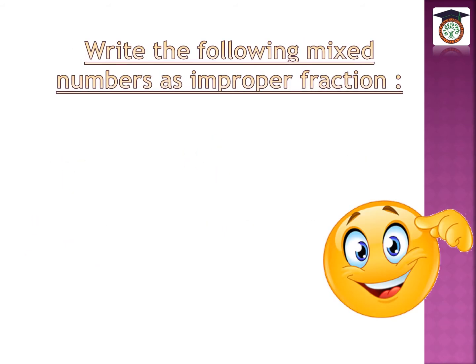Write the following mixed number as an improper fraction. I want to change the mixed number to an improper fraction. How do we do this? Now we have the mixed number 1 and a half, that is 1 and 1 over 2. I want to change this mixed number to an improper fraction.